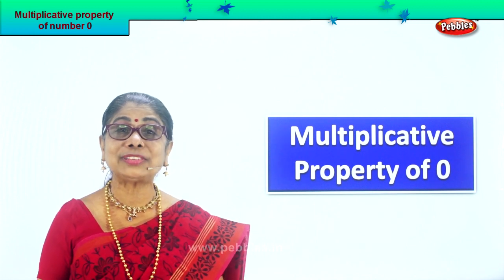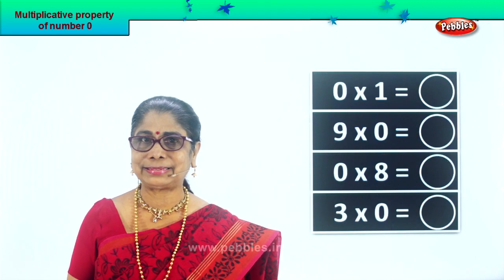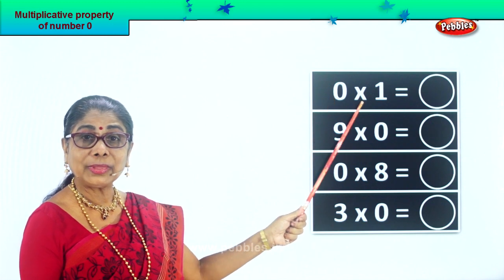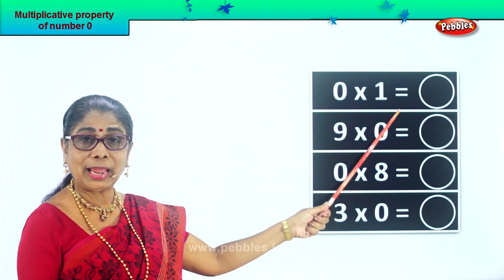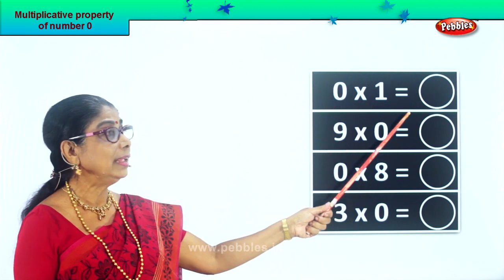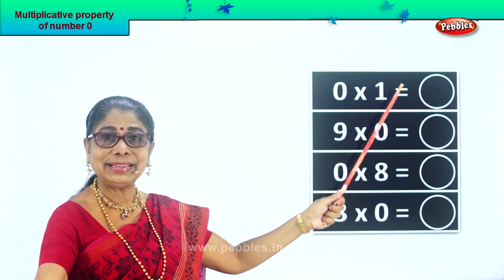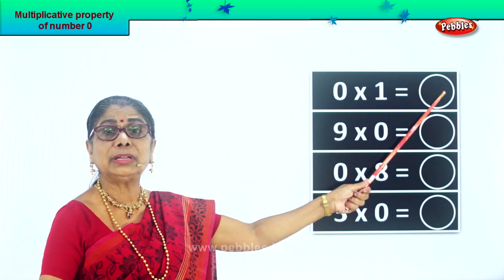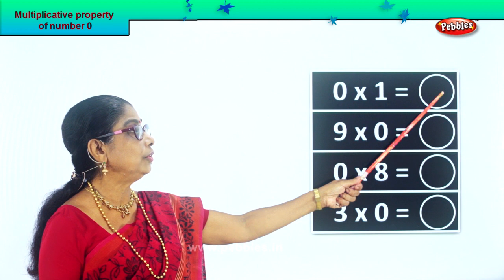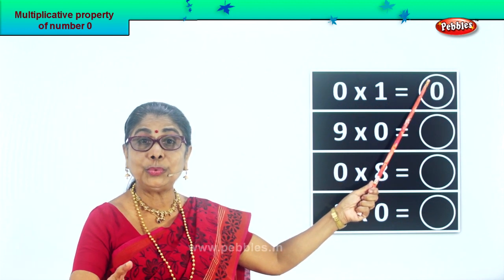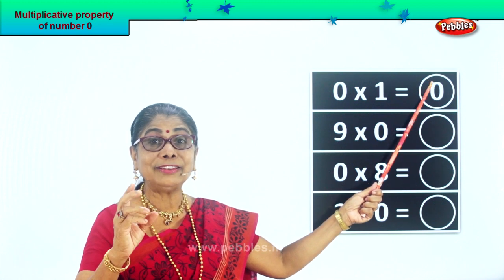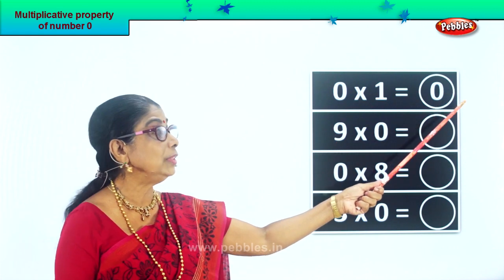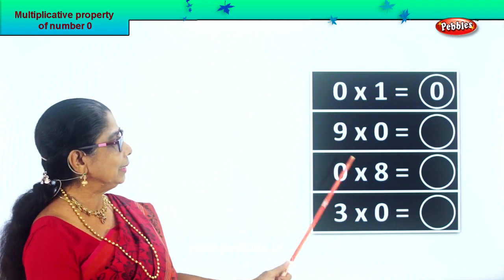Let's look at our first set of sums. Look at this — what do you see here? Zero into one, zero multiplied by one. Zero into one is equal to — give me the answer please — good, zero itself. Zero into one is equal to zero itself, very good. So we write here in this column: zero. The Multiplicative Property of Zero — zero multiplied by one gives you the answer zero. Yes? I hope you enjoy the exercise.